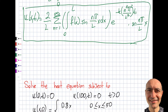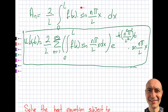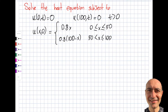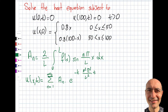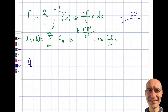To solve this, recall from last time that the solution is given in terms of aₙ — that's the key coefficient to find. The temperature distribution at any given time is the summation from n=1 to infinity of aₙ times e to the minus k·n²π²/L²·t times sin(nπx/L). The first thing to note is that L is clearly 100.